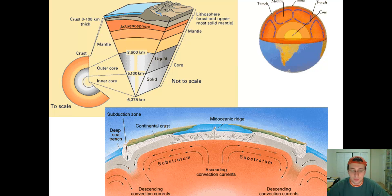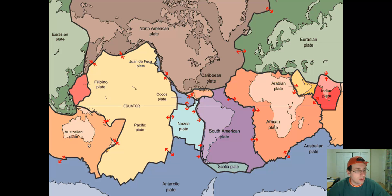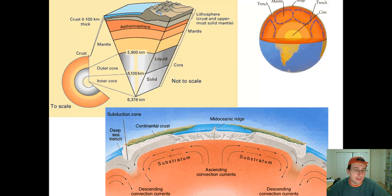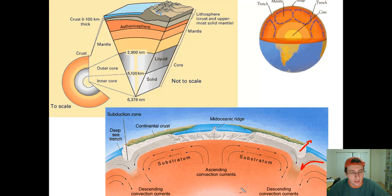So all these plates are in constant movement. It's also important to consider oceanic versus continental crust. Continental crust is less dense than oceanic crust, so whenever an oceanic crust meets the continental crust, the continental crust will usually be on top and the oceanic crust will sink underneath.